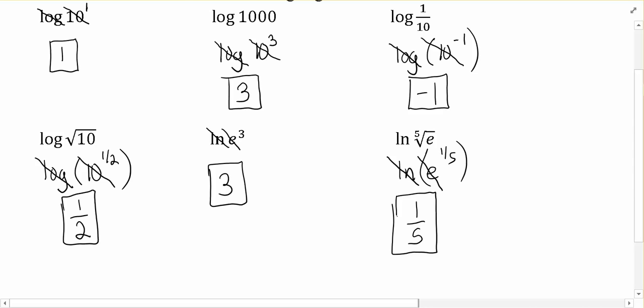Hopefully you have some experience with the generic logarithms of any old base that we've done previously. Now we're just dealing with two special bases, base 10 for common log when you don't write a base, and if it's ln for natural log, then we assume the base is e.